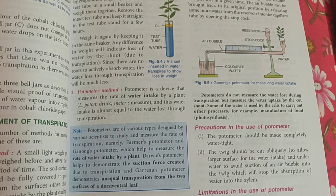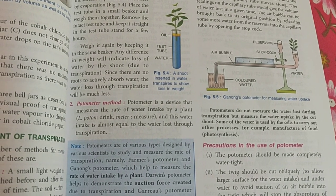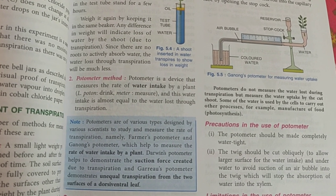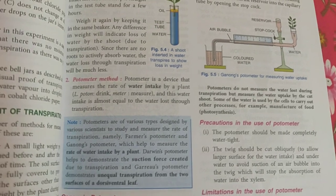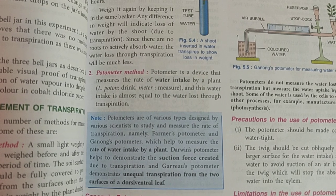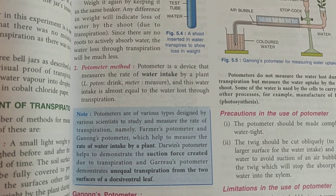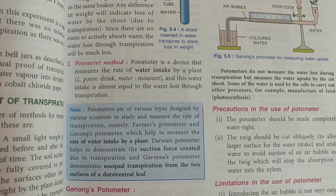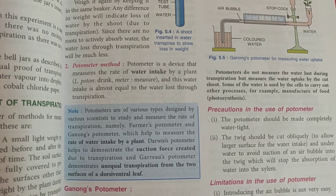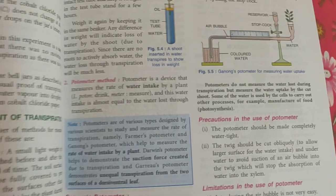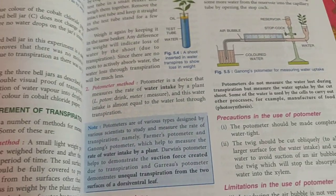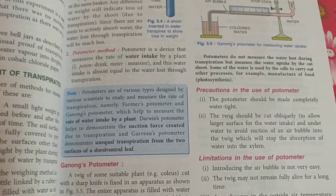Now let us move to the potometer, which is a device that measures the rate of water intake by a plant. This water intake is considered to be almost equal to water loss through transpiration, which is why we say the potometer is a way of measuring transpiration — but actually it measures the rate of water intake by the plant. We will be studying Ganon's potometer specifically, as there are various types made by various scientists.